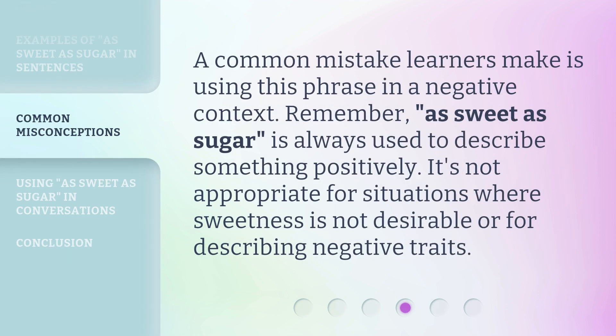A common mistake learners make is using this phrase in a negative context. Remember, 'as sweet as sugar' is always used to describe something positively. It's not appropriate for situations where sweetness is not desirable, or for describing negative traits.